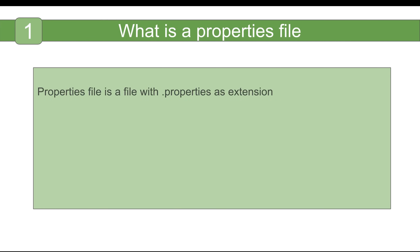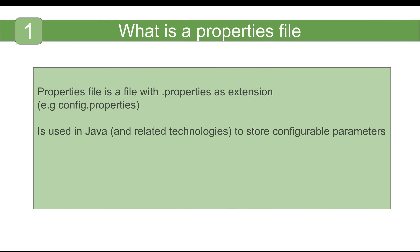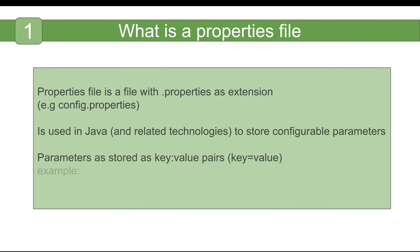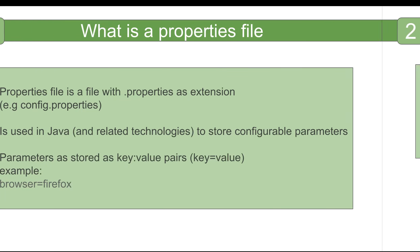A properties file in simple language is any file that has a .properties extension. In Java and related technologies, we use properties files to store our configurations, and we store our configuration as key-value pairs.